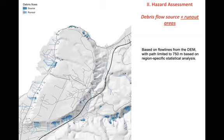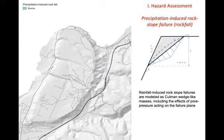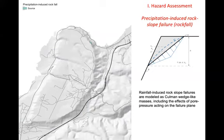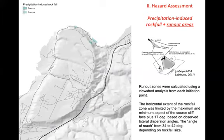We also assessed rock slope failure and rockfall hazards. We can incorporate the destabilizing effect of water in a discontinuity, modeled with a Coulomb wedge-like function. Those susceptible locations are shown at the top of the diagram in green. These events are associated with runout as well — we use a viewshed analysis that allows these to run out in an apron-like fashion below the source area.